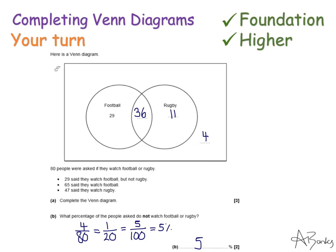The second part of this question was a little bit harder than the last one. It says, what percentage of these people asked do not watch football or rugby? So it's these 4 here, and it's 4 out of 80. I simplify my fraction to get 1 out of 20. Then to change it into a percentage, I need to make it out of 100. So I've multiplied my top and bottom of my fraction by 5, so then it's 5%.